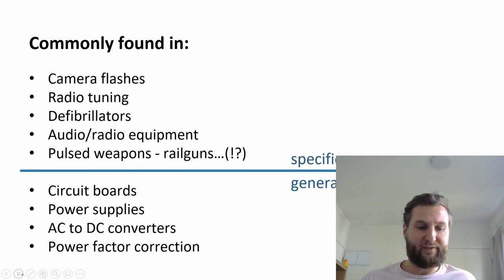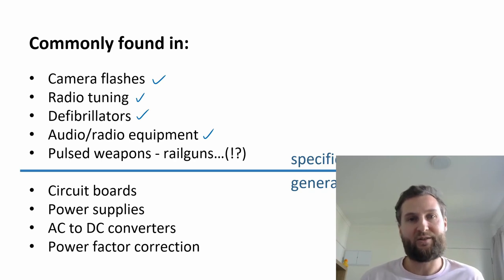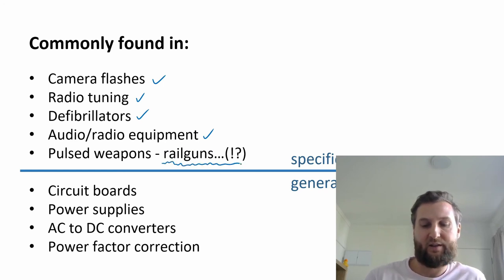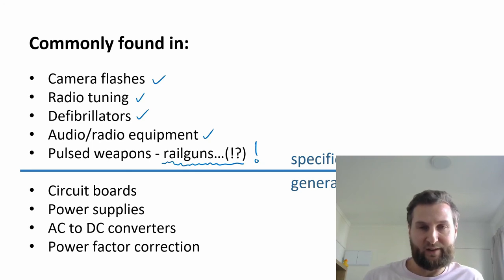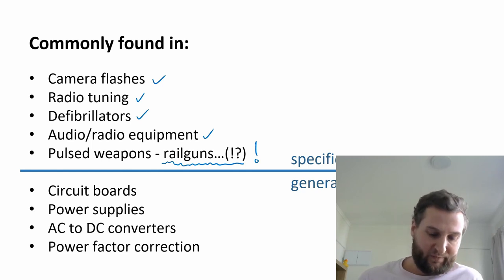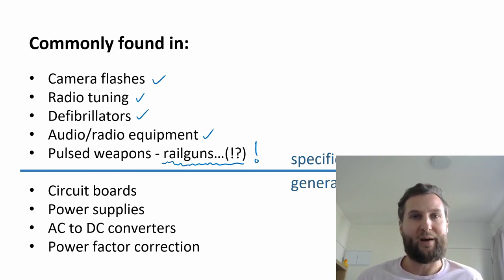You can commonly find capacitors in things like camera flashes, defibrillators, and audio and radio equipment — capacitors are used to help tune frequencies in radios. Pulsed weapons like rail guns also use them. More general cases include circuit boards and power supplies — if you bust open a power brick you might find a capacitor. AC to DC converters can use capacitors to help even out the voltage. In large buildings running their own power supplies, power factor correction may take place with a big bank of capacitors to help evenly distribute voltage.